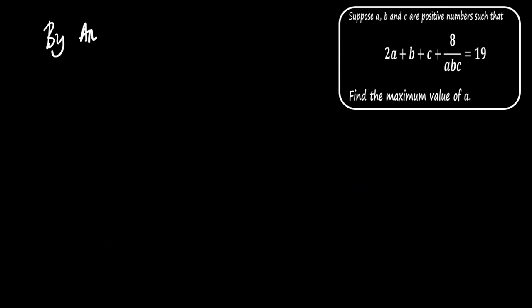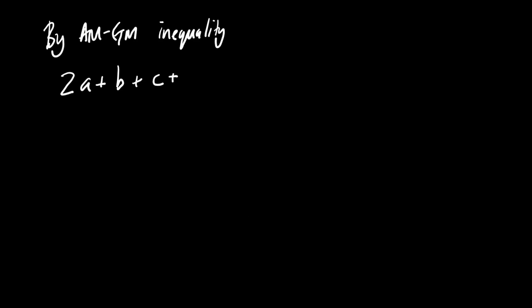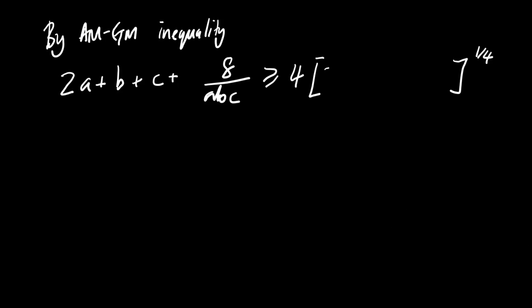In this part, we are applying the arithmetic mean geometric mean inequality, or AM-GM inequality, to solve the problem. We are given the equation (2A + B + C + 8) divided by ABC, and we know that this is greater than or equal to 4 times the 4th root of the product of 2A, B, C, and 8 divided by ABC.